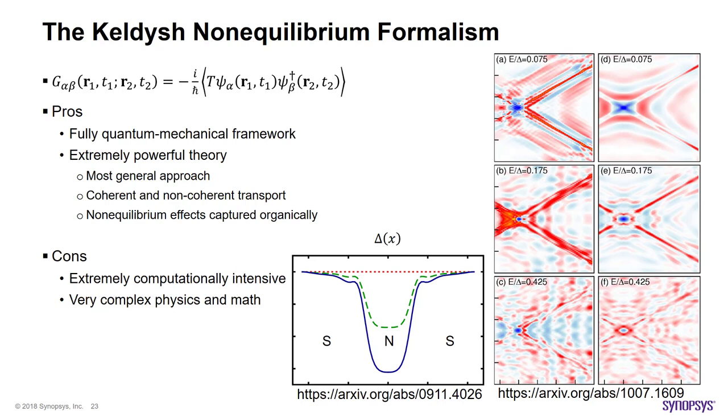The final method I would like to briefly mention is the Keldysh non-equilibrium formalism. This is a fully quantum mechanical framework that extends the equilibrium quantum field theory to the non-equilibrium case. The basic constructs in this theory are various flavors of the Green's function, which are very similar to particle propagators, yet are richer than them. This provides a very powerful and general approach to solving the Bogoliubov-de Gennes equations of superconductivity that is capable of treating coherent and non-coherent transport in a non-equilibrium setting. Of course, with everything great, it comes with its downsides, one of which is that it's extremely computationally demanding. It also involves some complex physics and math.